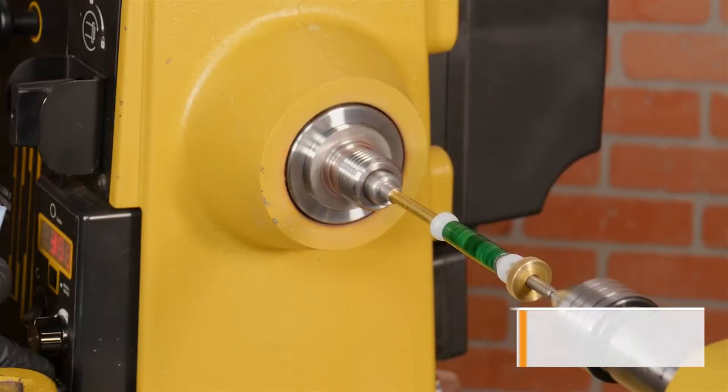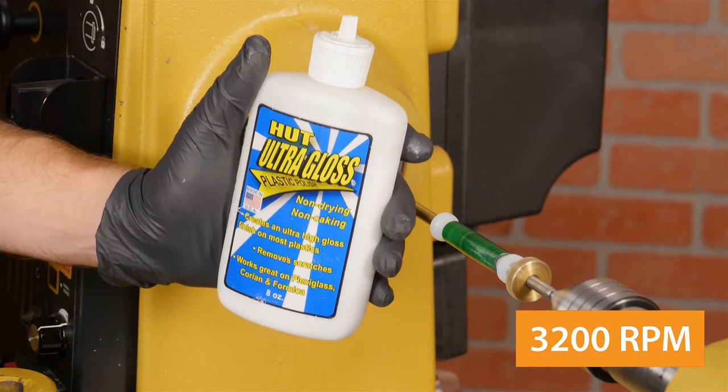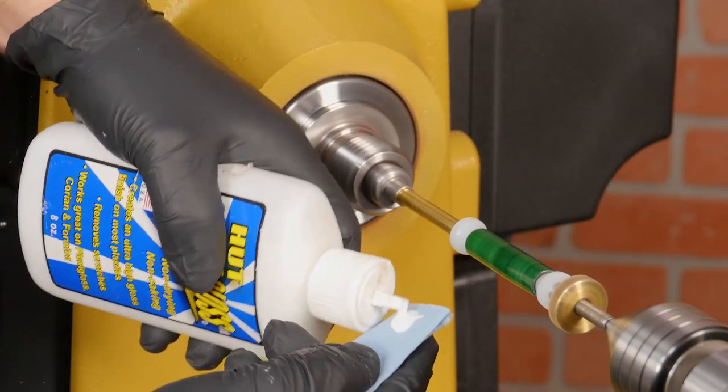Bring up the lathe speed to around 3200 rpm and apply some Hutt Ultra Gloss Plastic polish to a clean cloth and buff the blank with the lathe running.